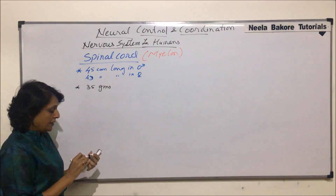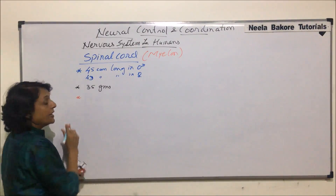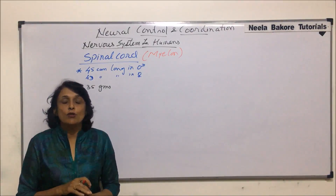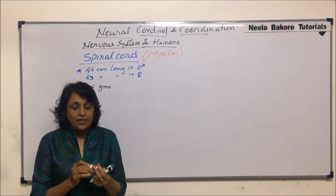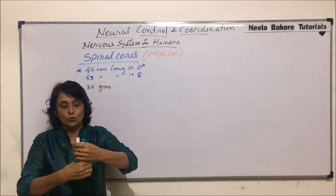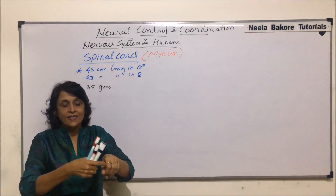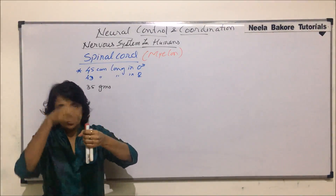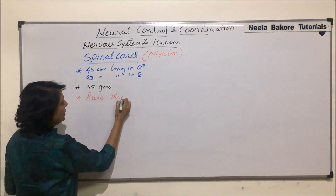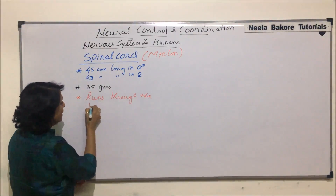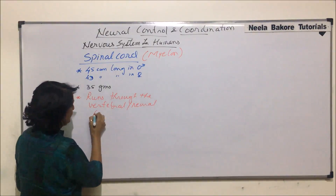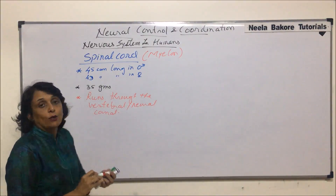Regarding its location, the spinal cord actually passes through the vertebral canal, which is also known as the neural canal. The vertebrae are placed over one another, and the spinal cord goes through them. Each vertebra has a canal in the middle and the spinal cord runs through this vertebral or neural canal.